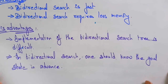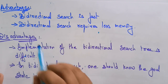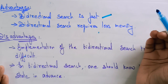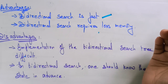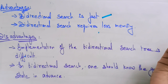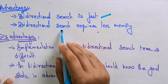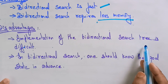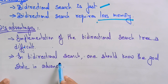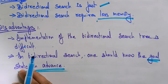Before going to the example, let's see the advantages and disadvantages. The advantage is that bidirectional search is fast, because the complete graph is divided into two graphs — one doing one portion of the work and another doing the other — so searching becomes faster with both forward and backward searches running simultaneously. It also requires less memory. The disadvantage is that implementation of the bidirectional search tree is difficult, and one must know the goal state in advance, which is a drawback.